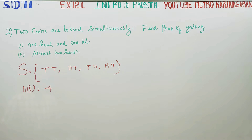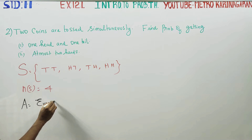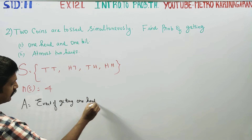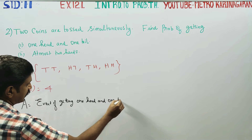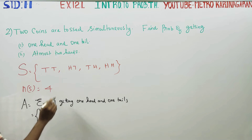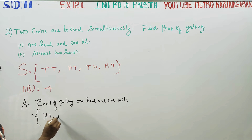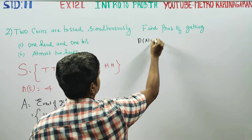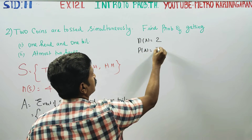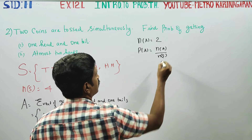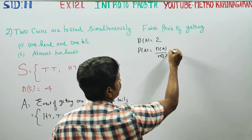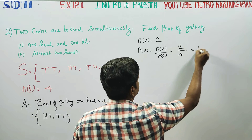First question: probability of getting one head and one tail. A is equal to event of getting one head and one tail. The elements are head-tail and tail-head, so n of A is equal to 2. Probability of A equals n of A by n of S, which is 2 by 4. Cancelling, the answer is 1 by 2.